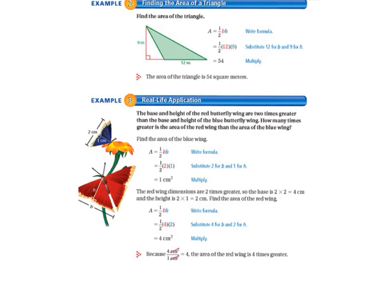We have a triangle with a base of 12 meters and a height of 9 meters. We write our formula and substitute 12 for B and 9 for H. Using the associative property, we multiply 12 times 9 first, then take half of that, and we get 54. So the area of the triangle is 54 square meters.